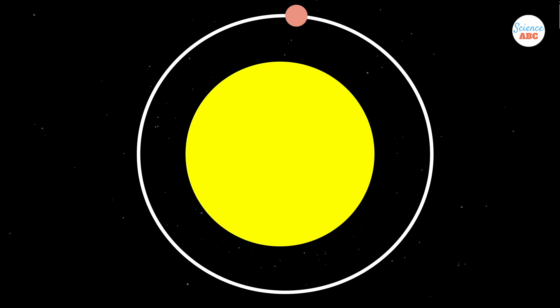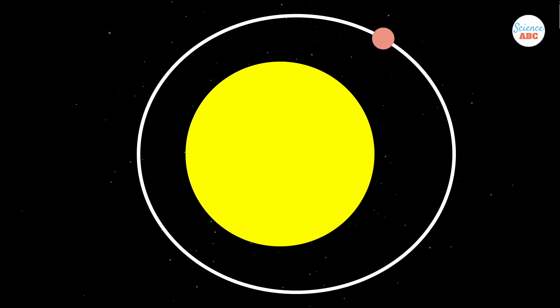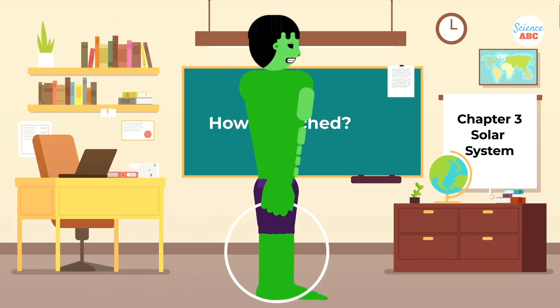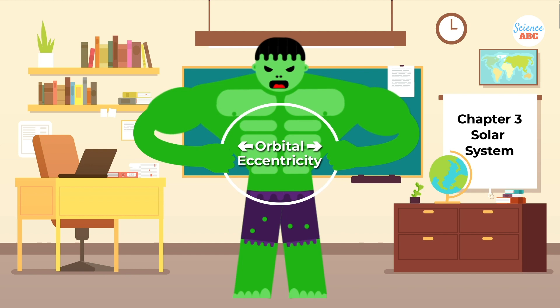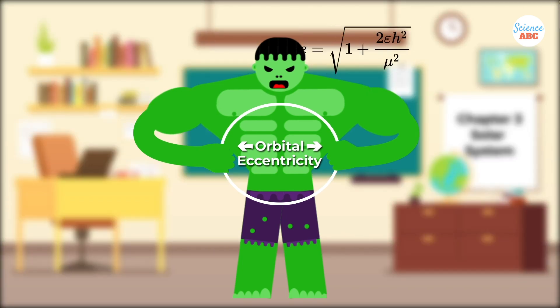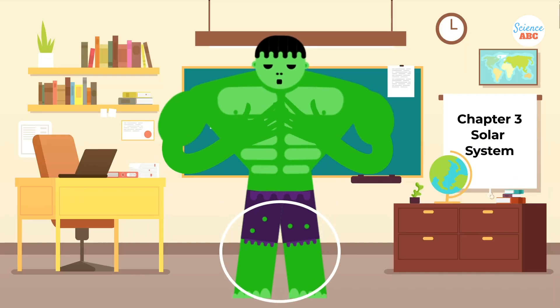Instead, they generally have a stretched version of a circle, which is technically called an ellipse. How stretched, you ask? Well, that all depends on the orbital eccentricity that the planets possess. Too much mathematics going over your head already? Let's get the basics down first.